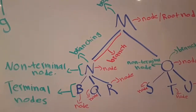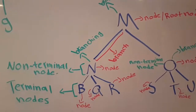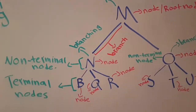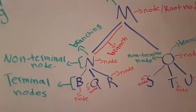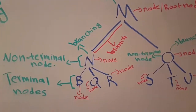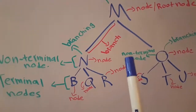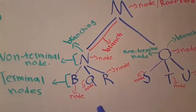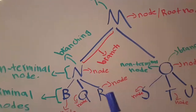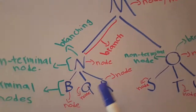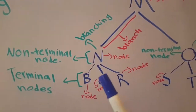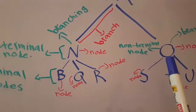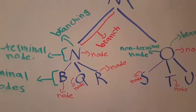In this video I am going to talk about each part in the tree that you are going to draw in syntax. This one is actually an abstract tree. It is abstract because here we have only letters like M, N, O, B, Q, and these letters are not real. For example, instead of the letter M I could put TP, instead of N I could put noun phrase, and here I could also put a verb phrase.